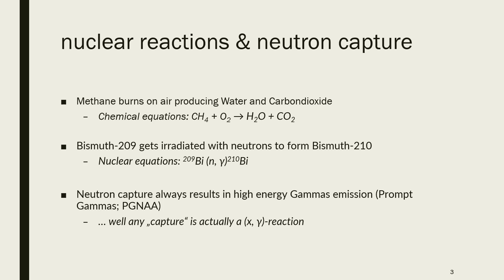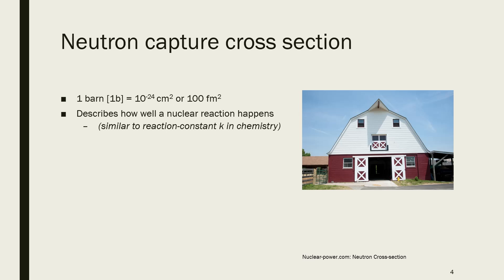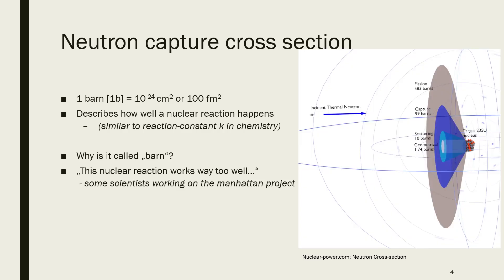If we have a reaction, we want to describe how well this reaction works. We know for chemicals we have the K value. And for nuclear reactions, in this case, we have a unit which is called barn. One barn, which is 10 to the power of minus 24 centimeters squared or 100 femtometers squared. And why is it called a barn? Is it like a barn door? Yes, it is like a barn door. Because when they were working on the Manhattan Project, they were irradiating stuff and they were thinking, well, this kind of works a bit too well.